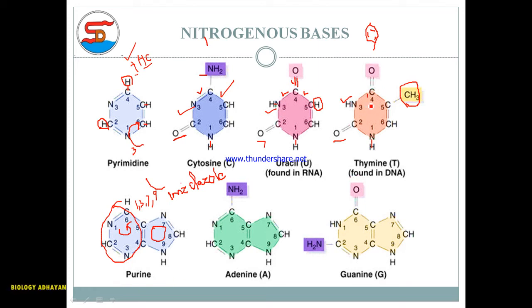Thymine differs from cytosine by having a methyl group attached at carbon position 5, while cytosine has just hydrogen there. This completes the structure of both pyrimidines.